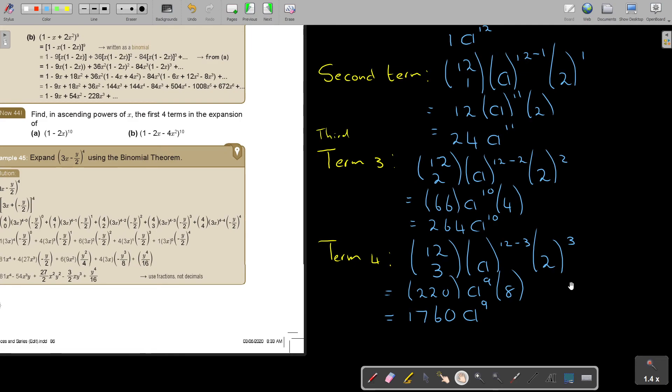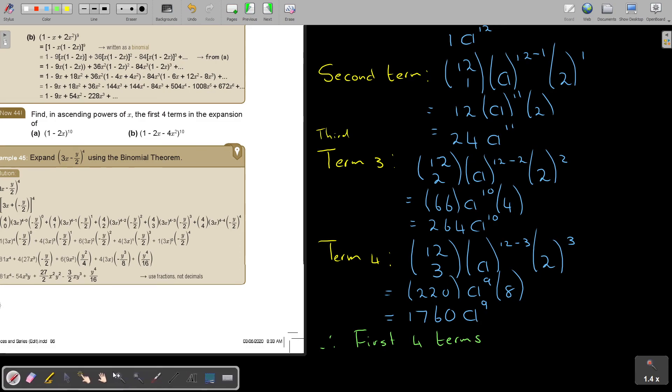And then if I must write my first 4 terms. Therefore, first 4 terms of A plus 2 to the power of 12, and that is equal to the first term was A to the 12. Then the second term was 24 A to the 11, and the third term was 264 A to the 10. And it was 1760 A to the 9. And there it was. There was all your terms. And that's how you do it. Not so difficult.